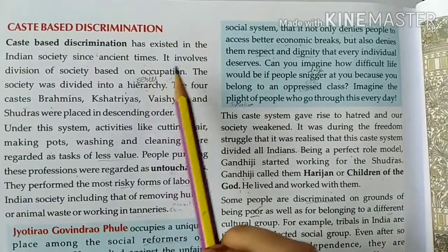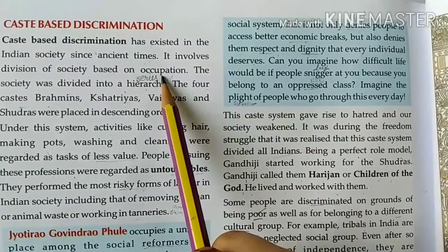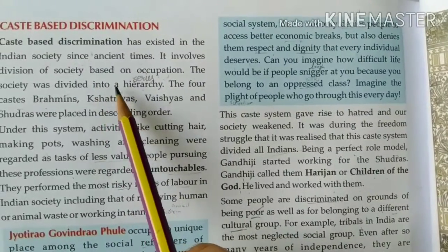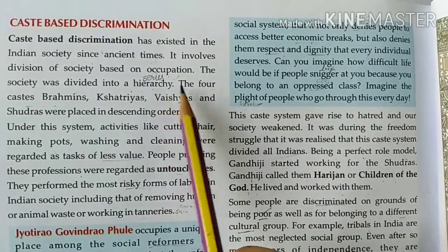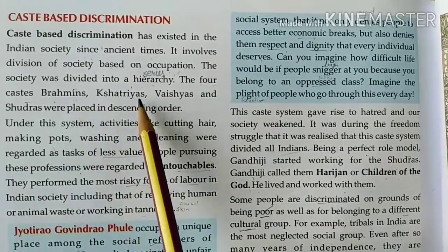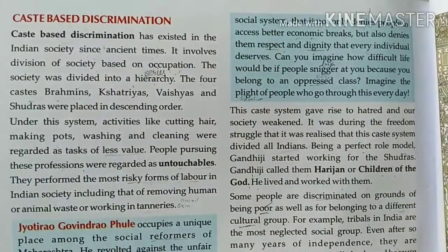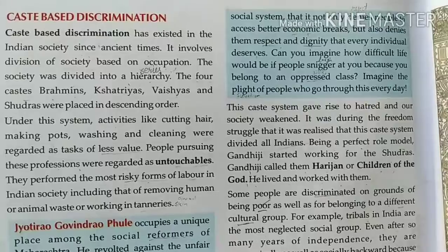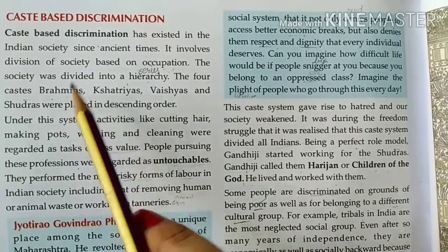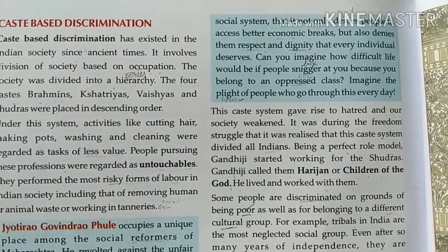This caste-based society was divided into a hierarchy of four parts based on occupation. The castes are: first, Brahmin; second, Kshatriya; third, Vaishya; and fourth, Shudra — in descending order. Brahmin people were considered superior in Indian society.